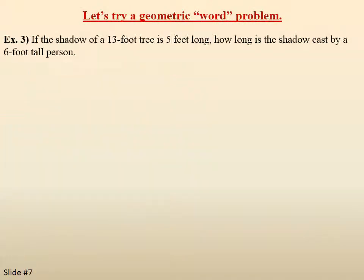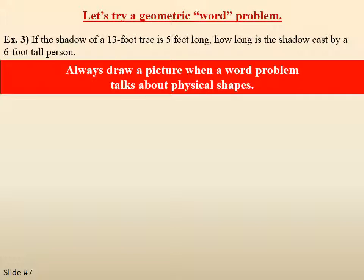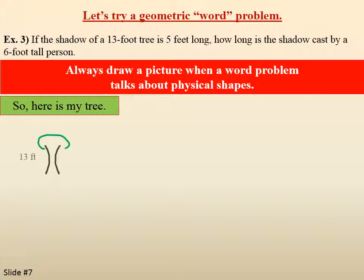Let's try a geometric word problem: if the shadow of a thirteen-foot tree is five feet long, how long is the shadow cast by a six-foot-tall person? Anytime a word problem talks about physical shapes, always draw a picture. Here's my tree, labeled as thirteen feet, and its shadow is five feet long. The sun is drawn here just for perspective.